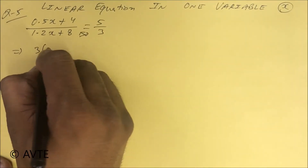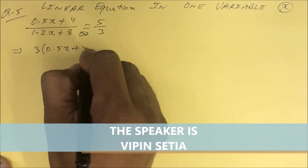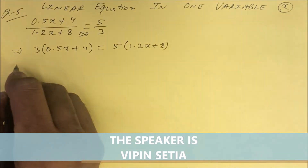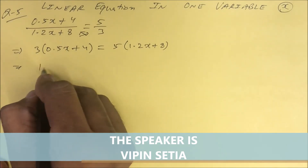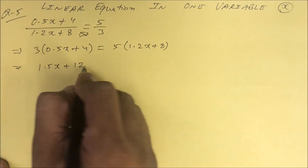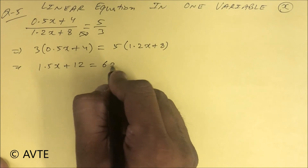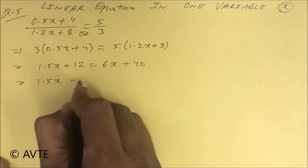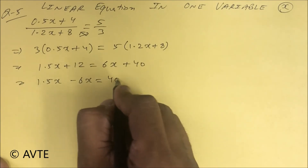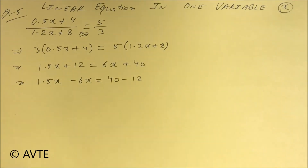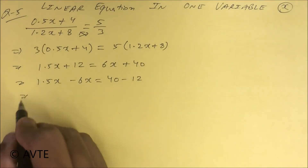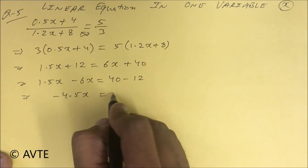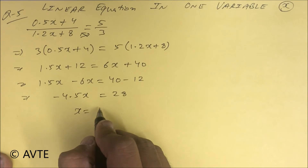Three in bracket 0.5x plus 4, so this is 1.5x plus 12 equals 6x plus 40. Then 1.5x minus 6x equals 40 minus 12. My speed is a little fast in this question — minus 4.5x equals 28.